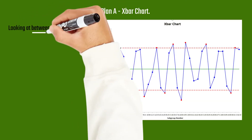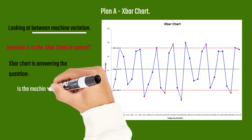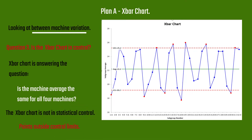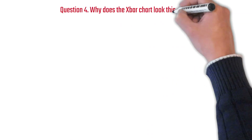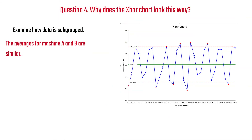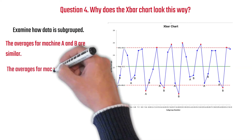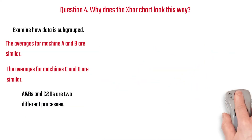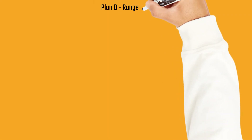Here's the X-bar chart for Plan A, which looks at the variation between machines. Is it in control? No — we have points that are red. It's answering the question: is the machine average the same for all machines? Since it's not in control, the answer is no — we do have points beyond the control limits, and the averages are not the same. Why does the X-bar chart look the way it does? The averages for machines A and B are very similar — they're lower than the averages for C and D — because each subgroup contained parts from the same machine. So A and B have similar averages, and C and D have similar averages. You want to find and eliminate those causes.